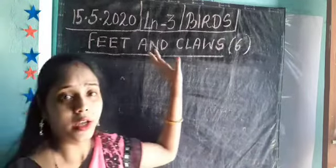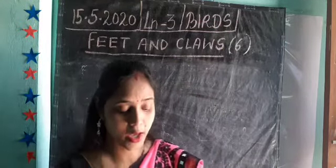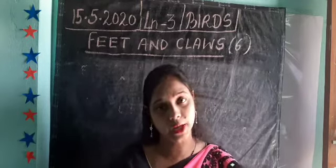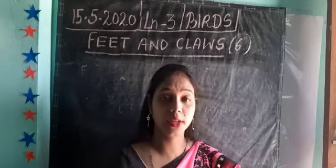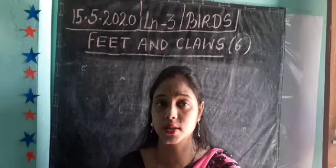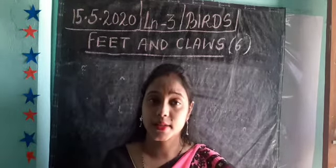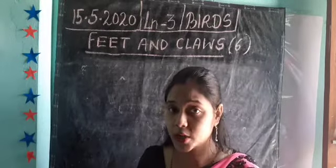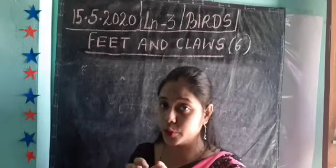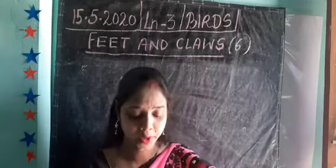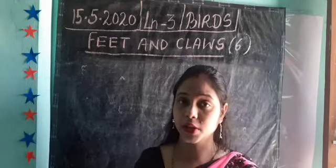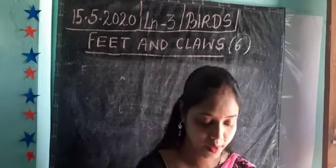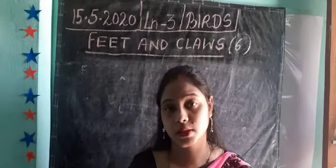So, according to feet and claws, there are six types of birds: swimming bird, climbing bird, perching bird, wading bird, scratching bird, and the last one is the bird of prey or flesh-eating bird. In this lesson on birds, we have studied body parts of birds, use of beaks, types of beaks, and types of feet and claws. Our next topic, wings and feathers, will start in the next session.